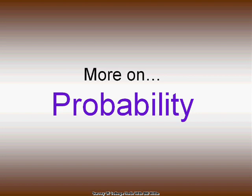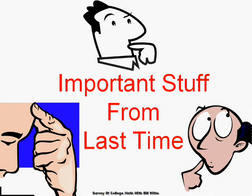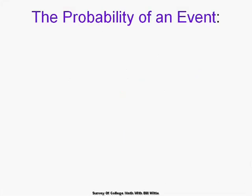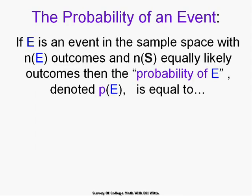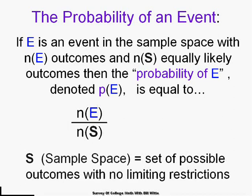Let me remind you what we did last time about probability. The definition of the probability of an event E: if E is an event in the sample space S with equally likely outcomes, then the probability of E is defined as the number of elements of set E divided by the number of elements in the sample space. The sample space is the set of all possible outcomes with no limiting restrictions.